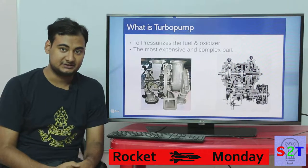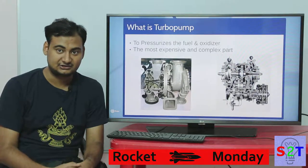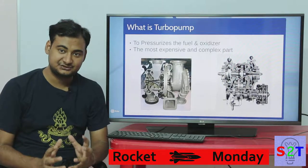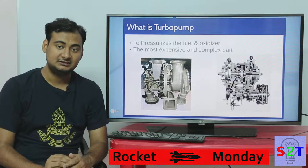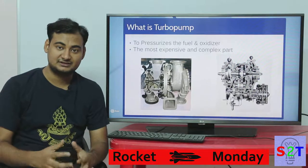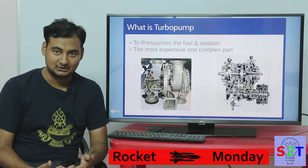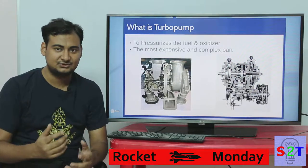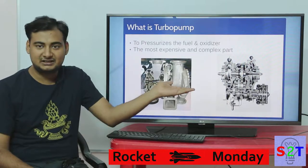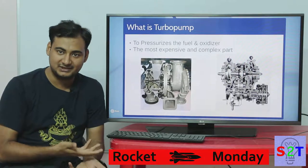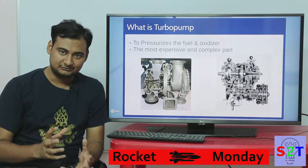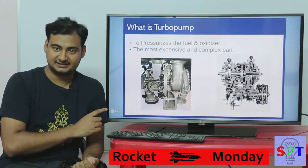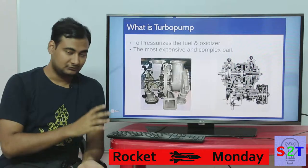To drive the turbo pump, you have a few options. You can use battery power, like the Electron rocket does. The most commonly used method is a gas generator, where you burn fuel with oxidizer — but generally not to 100% completion, because if you do, the temperature gets too high. So you typically use excess oxygen with a little fuel to create hot gases at a manageable temperature, not something like 3000 degrees that would melt the hardware. This gas generator controls and pressurizes the fuel.